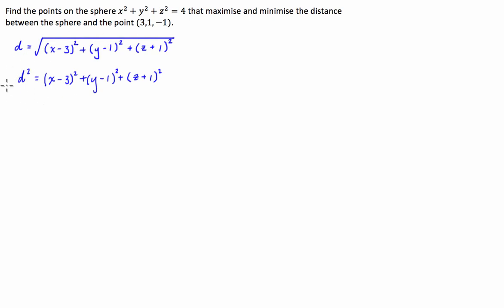We're trying to maximise and minimise this function — this is what we call our objective function. We also have a constraint placed on it; we've got to maximise and minimise the distance with respect to this constraint, which is x squared plus y squared plus z squared equals 4.